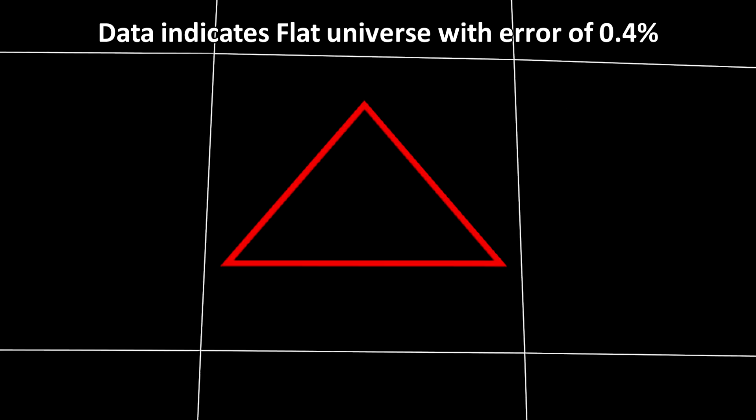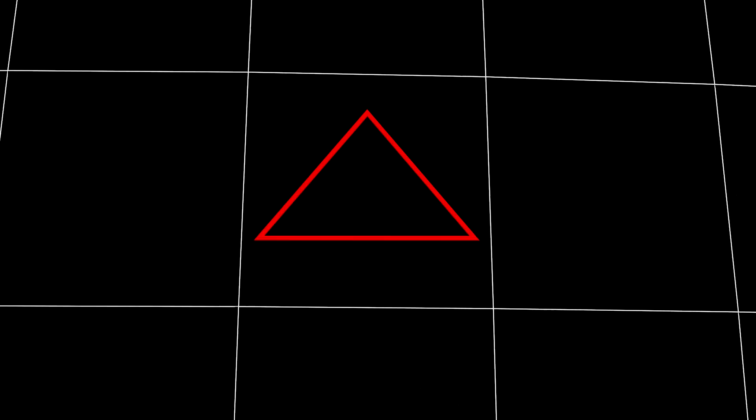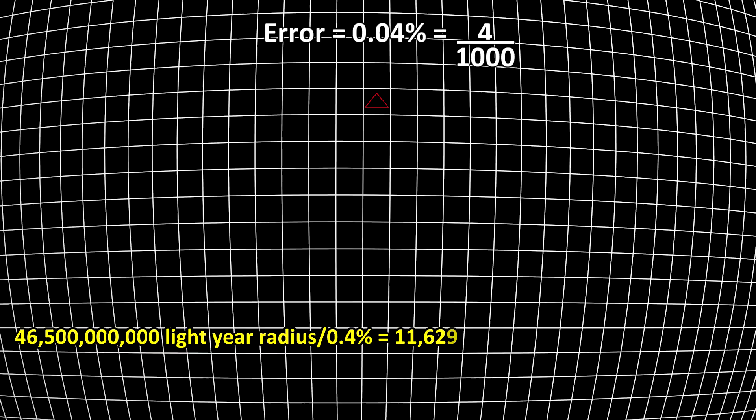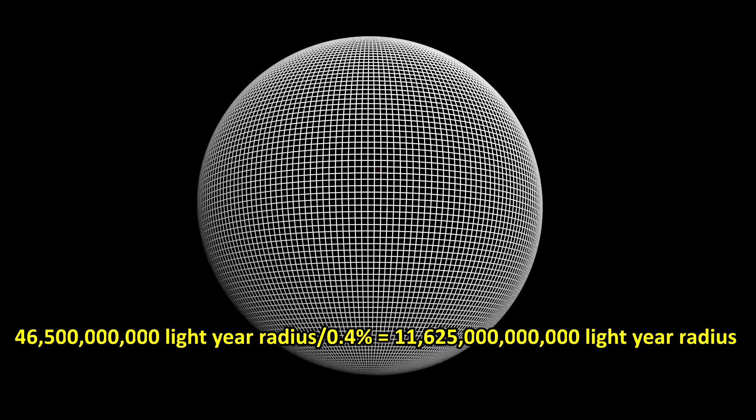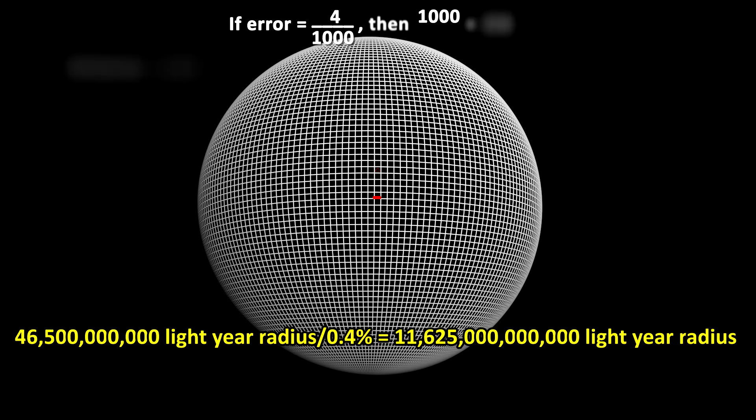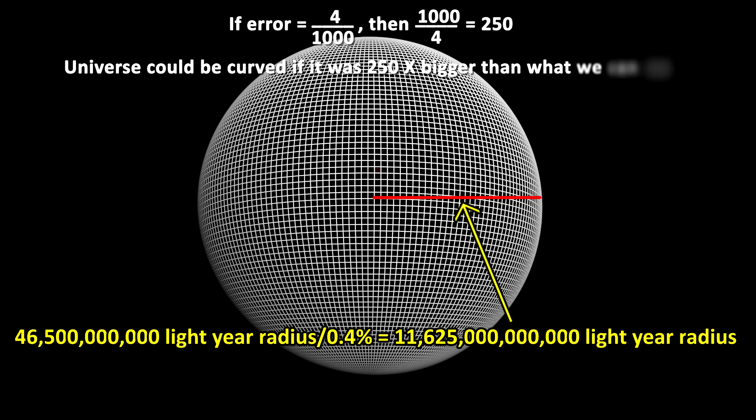But if the error is taken into account, then it is possible that the universe could have a slightly positive curvature. In that case, it would be finite, but would have to be a radius at least 250 times larger than the part that we can see. This would be a minimum size of about 11.6 trillion light years in radius, or about 23 trillion light years in diameter,